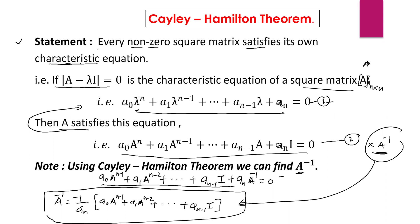The Cayley-Hamilton theorem states that every non-zero square matrix satisfies its own characteristic equation. If determinant of (A minus lambda I) equal to 0 is the characteristic equation of square matrix A of order n, and when we solve this we get the nth degree polynomial in lambda. Then the Cayley-Hamilton theorem says A satisfies this characteristic equation — that is, instead of lambda, we write A.